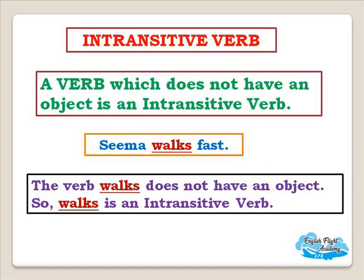Now what's an intransitive verb? A verb which does not have an object is an intransitive verb. For example, 'Seema walks fast.' The verb 'walks' does not have an object, so 'walks' is an intransitive verb.